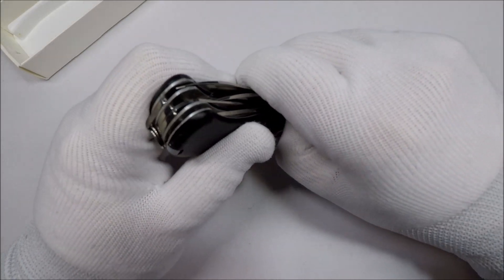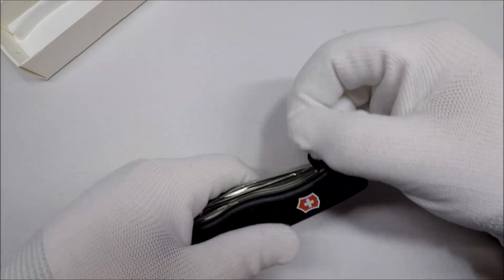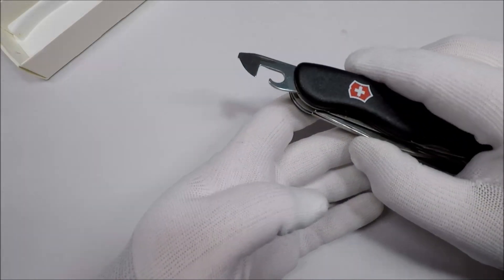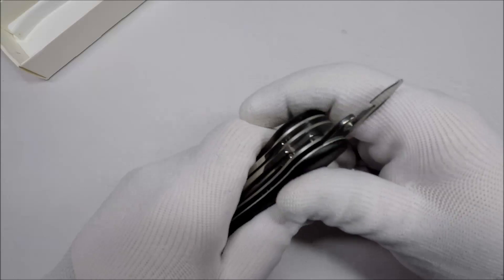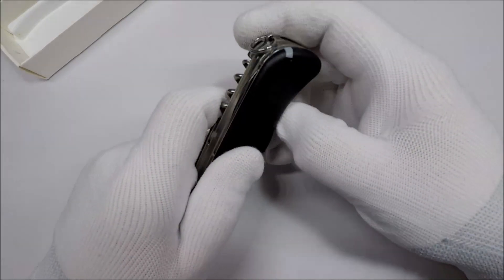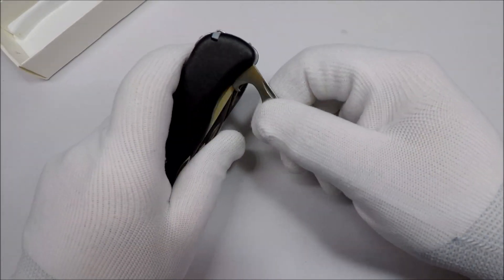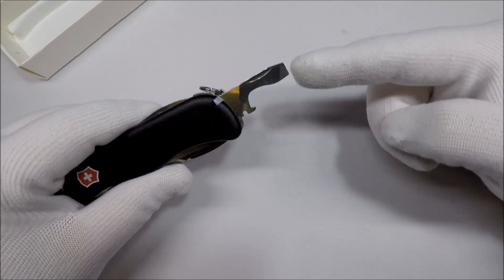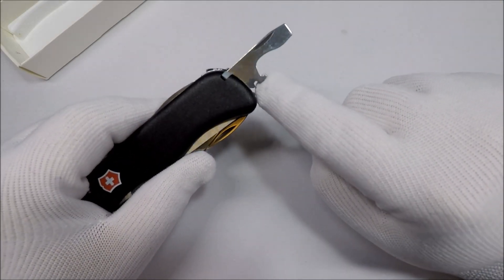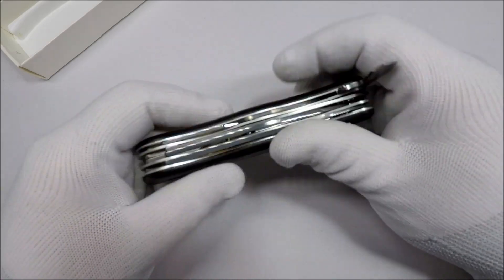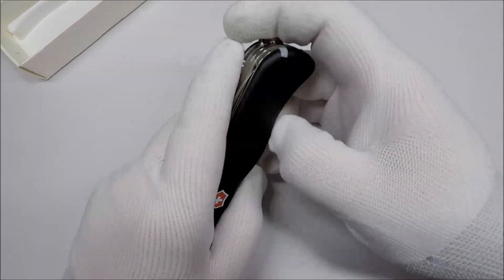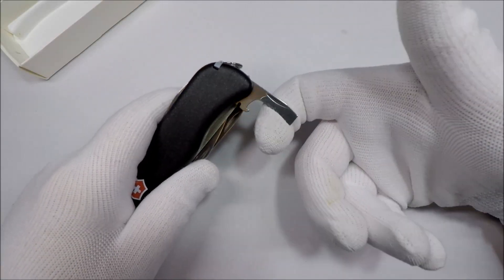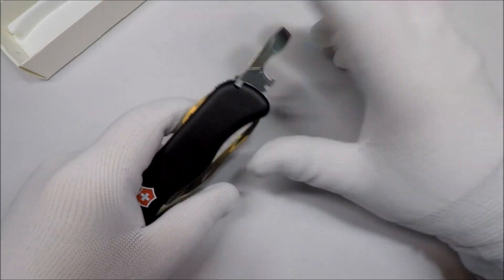This one has the traditional Victorinox can opener and a little flat head screwdriver. It has the traditional bottle opener, larger flat head screwdriver, and inexplicable wire stripper there. And I don't know if y'all noticed that or not, but it has two distinct stopping points. There's one here and one there for that.